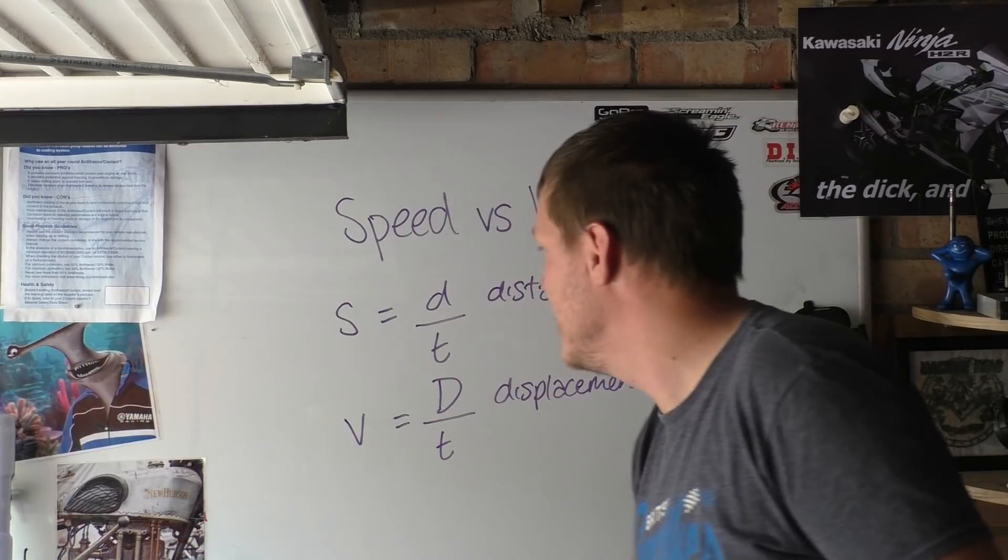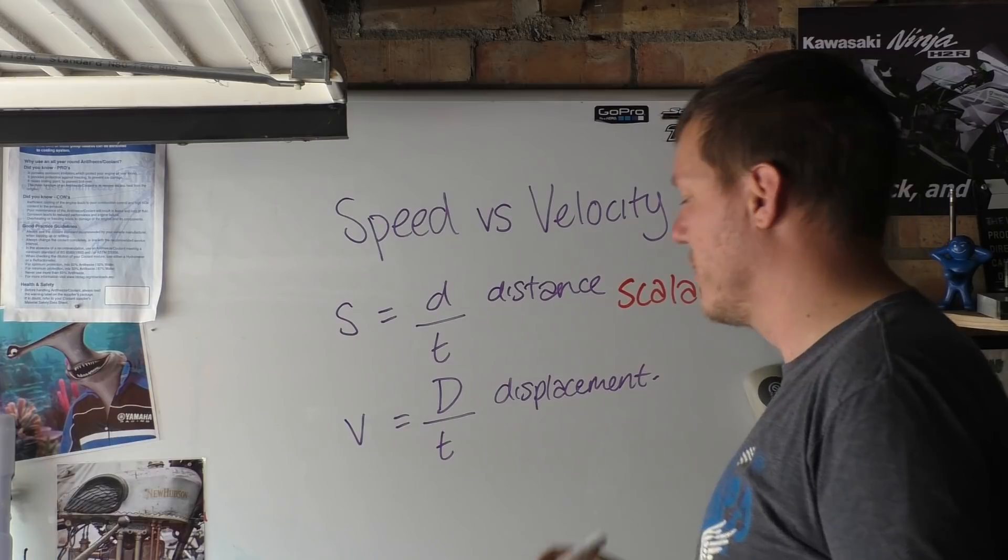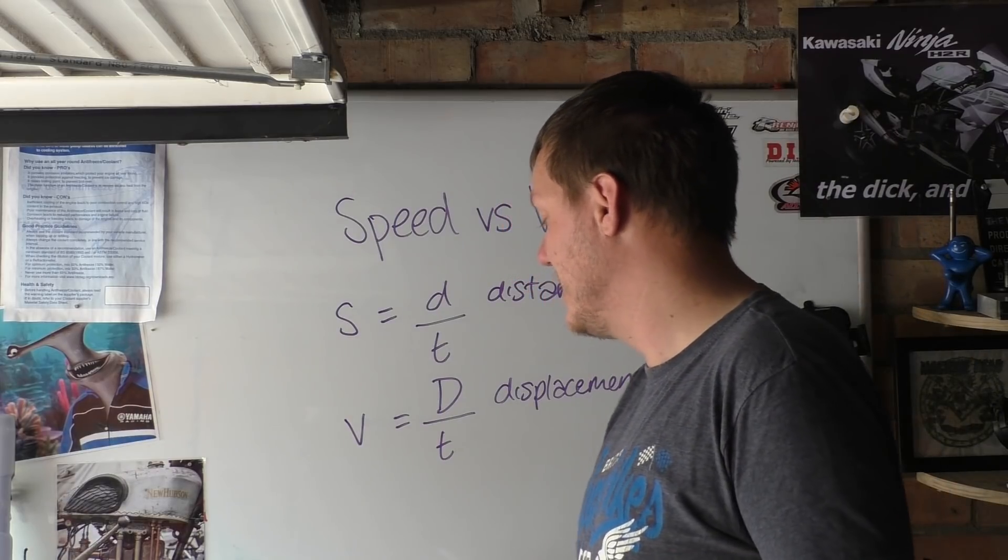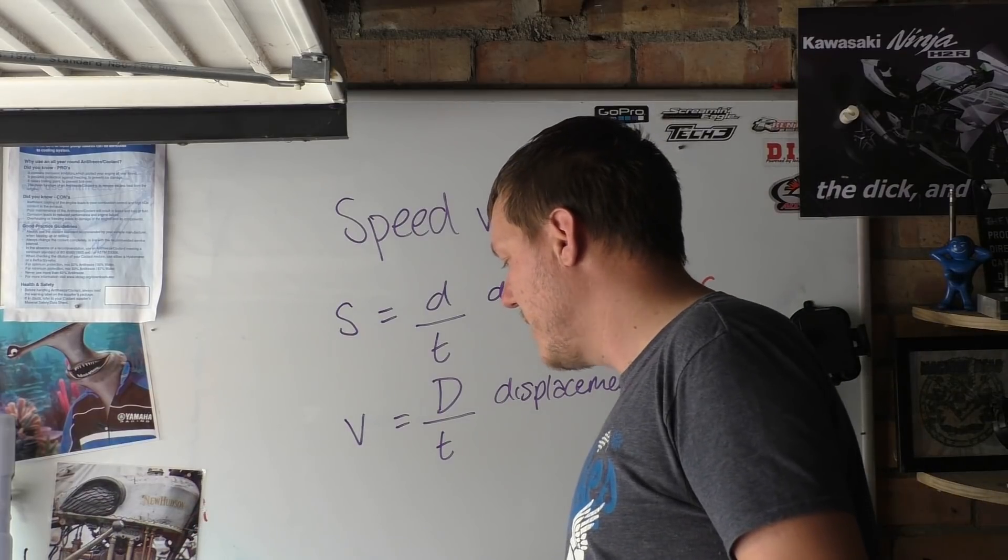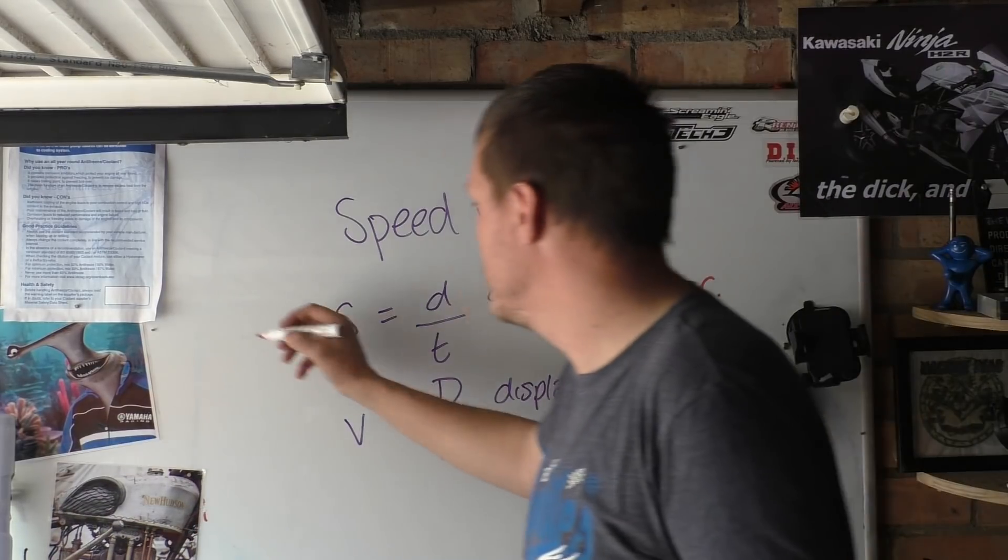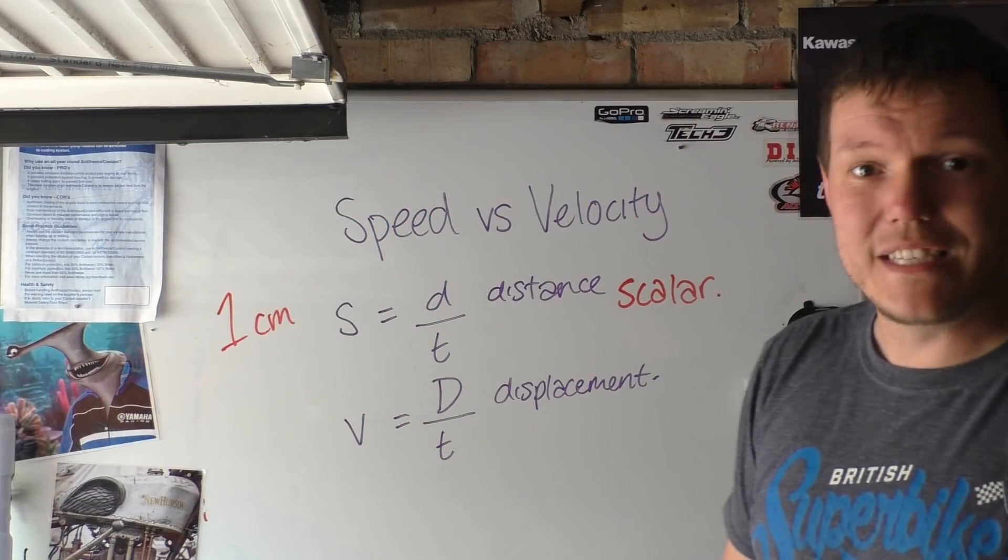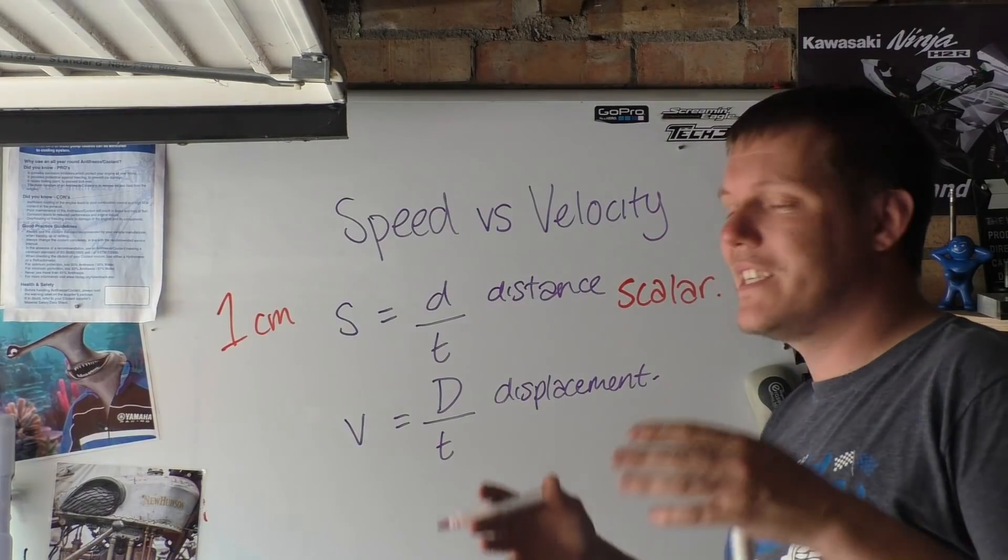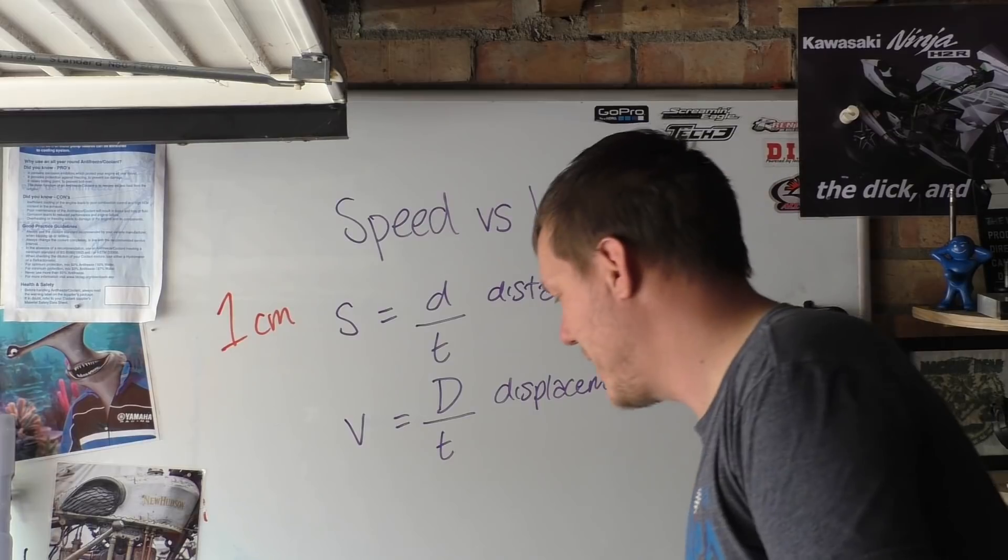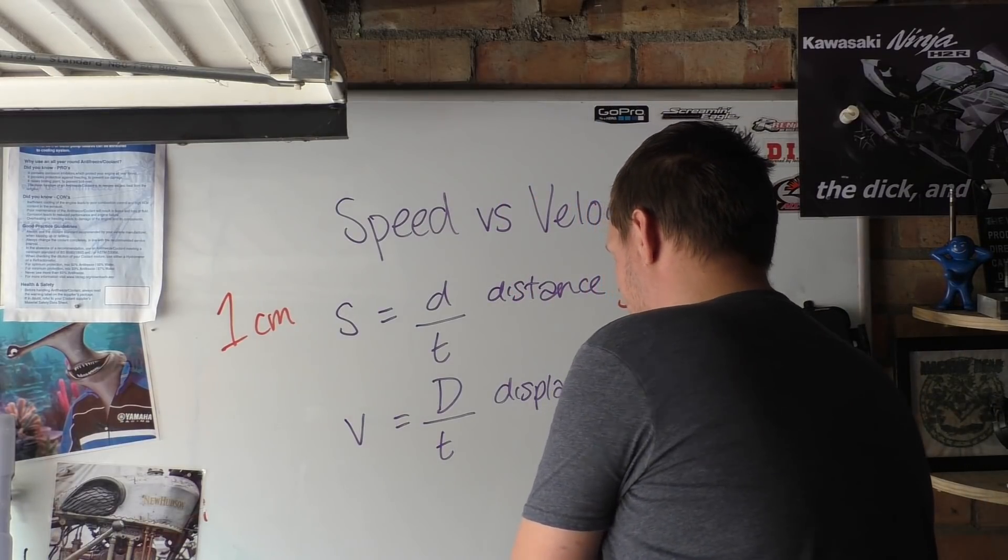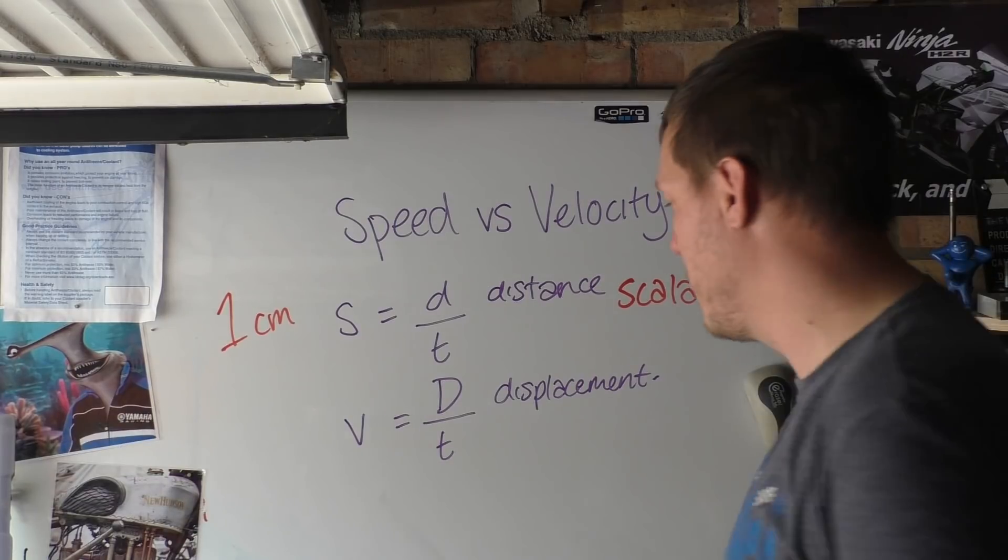Basically the difference is that speed here is what we call scalar. Another example of something scalar is a scale or a ruler something like that. And to compare it to something else we can just use like one centimeter. Right one centimeter is a distance but it has no direction, it has nothing.